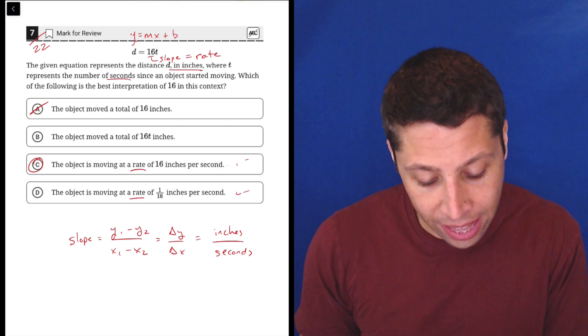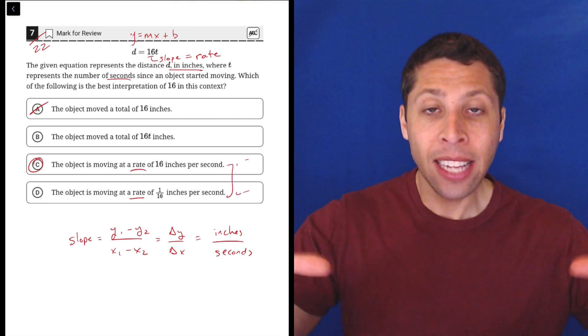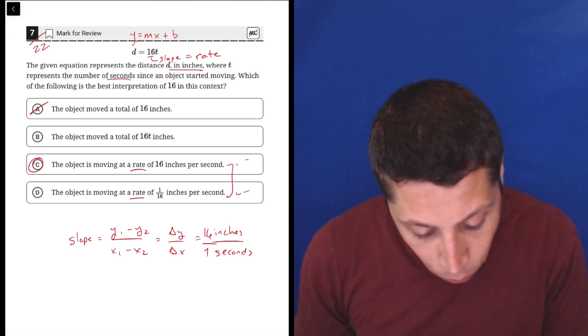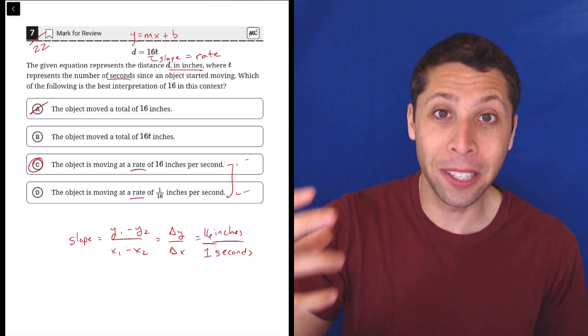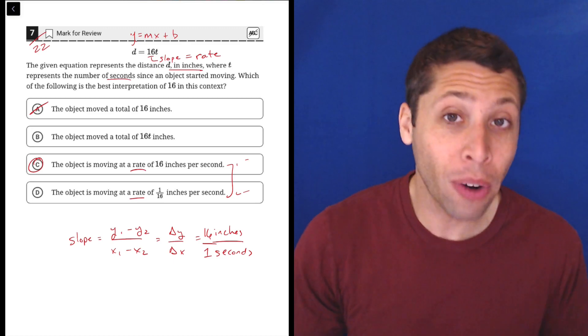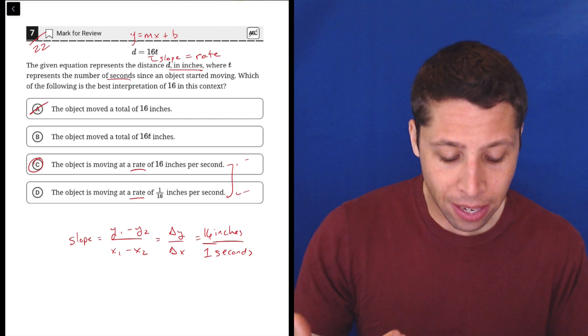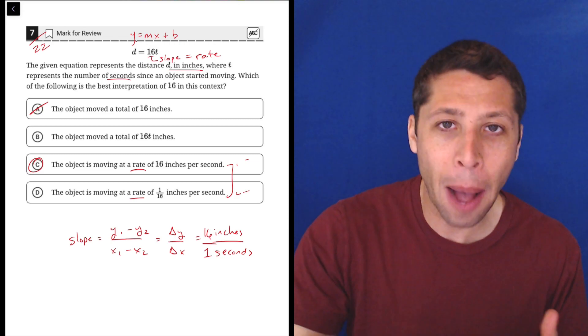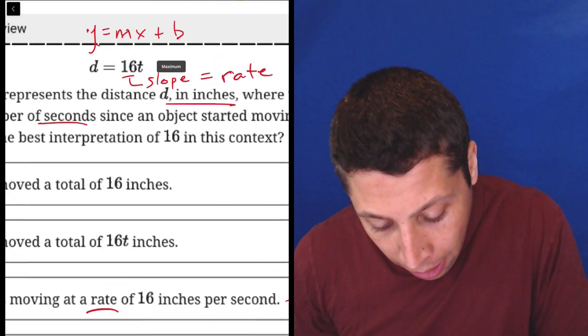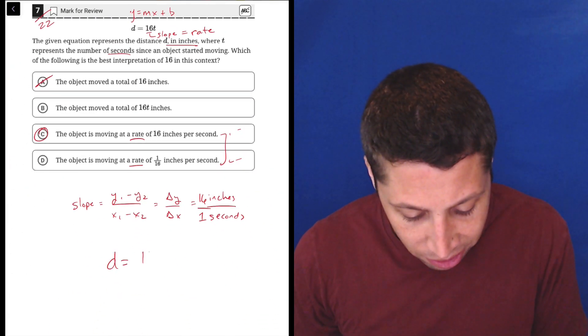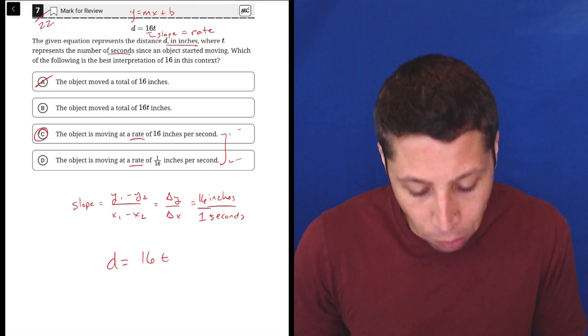Now I know that both C and D kind of hit that, but more importantly it hits it in a way that keeps the 16 on top. If we wanted to, we can always make a number into a fraction by just putting it over one. If we do that here, we can see that it makes much more sense for the 16 to be on top because that's the way it's written in this equation.